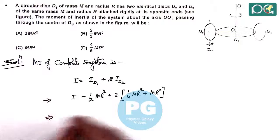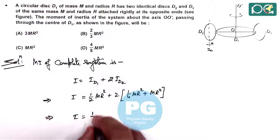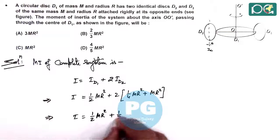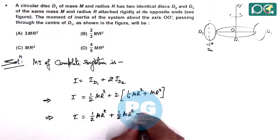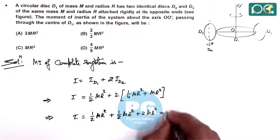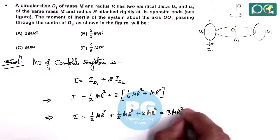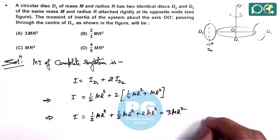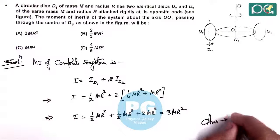On simplifying we are getting the value of I as half MR² plus half MR² plus 2MR² that gives us 3MR². So it matches with option A in this question.